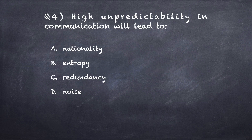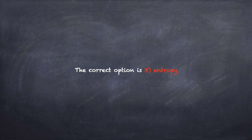Question number four: High unpredictability in communication will lead to? Option A: nationality. Option B: entropy. Option C: redundancy. Option D: noise. The correct option is B, entropy.